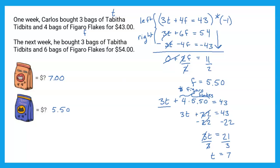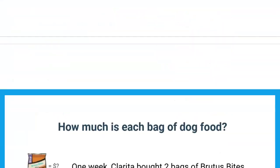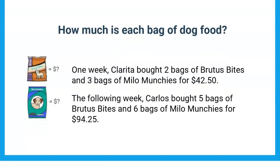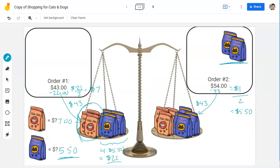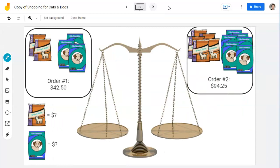Now let's look at a dog food problem. How much is each bag of dog food? One week Clarita bought two bags of Brutus Bites and three bags of Milo Munchies for $42.50. The following week Carlos bought five bags of Brutus Bites and six bags of Milo Munchies for $94.25. We'll go back to the Jamboard: two Brutus Bites and three Milo Munchies for $42.50; five Brutus Bites and six Milo Munchies for $94.25.